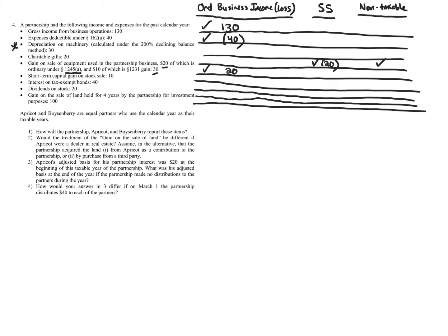What about the $10 of Section 1231 gain? Is there a reason a partner needs to know this specific amount? Yes — because Section 1231 requires putting everything into the hodgepot at year-end to determine whether it's long-term capital or ordinary. That's determined at the partner level, so Section 1231 gains go under separately stated — $10. The $20 is Section 1245 ordinary income; the $10 is Section 1231 separately stated.